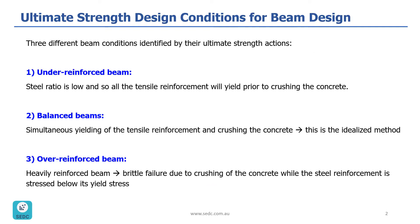We have three different ultimate strength design conditions for beams. The first one is under-reinforced beam, the second one is balanced beam, and the third one is over-reinforced beam. The difference between these three conditions is related to the amount of tensile reinforcement we have in the section.